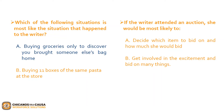Let's review the second question. If the writer attended an auction, she would be most likely to: A, decide which item to bid on and how much she would bid; or B, get involved in the excitement and bid on many things. The correct answer is B — get involved in the excitement and bid on many things. The writer states that she couldn't resist buying additional items when she was shopping online. Thus, if shopping excites her, she may not have carefully chosen which book to buy her mother, and had she done so, option A would be correct.